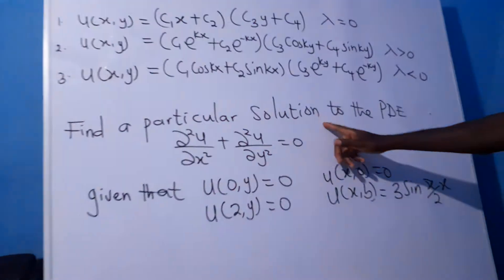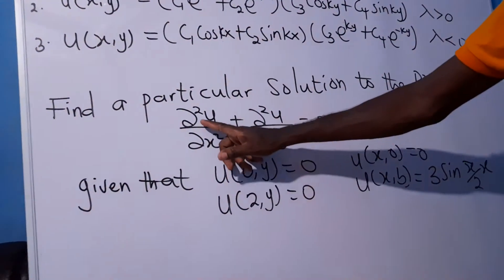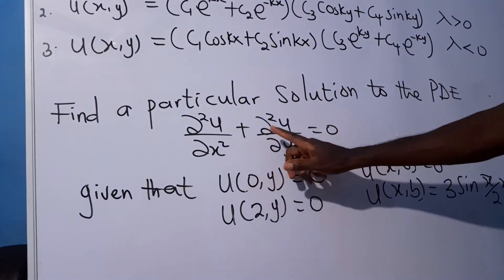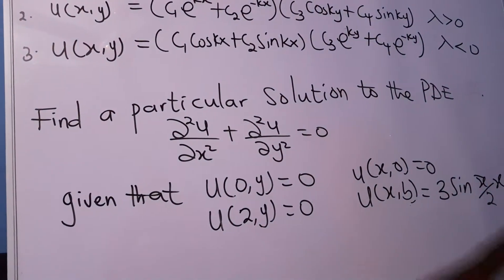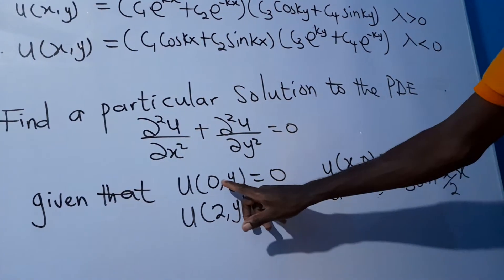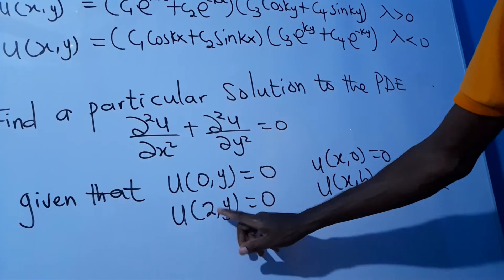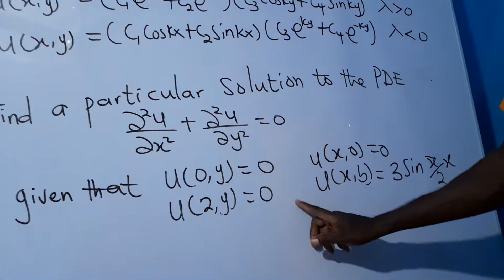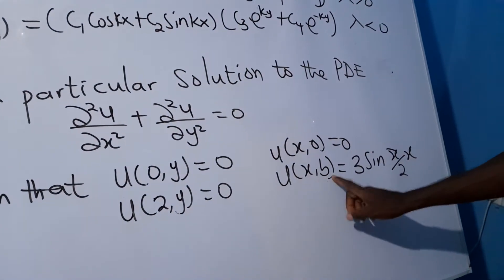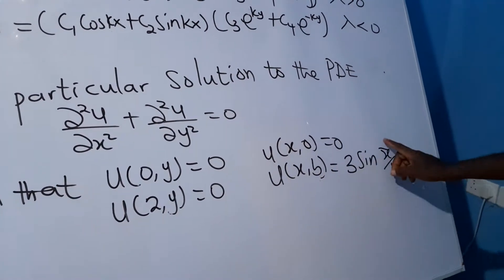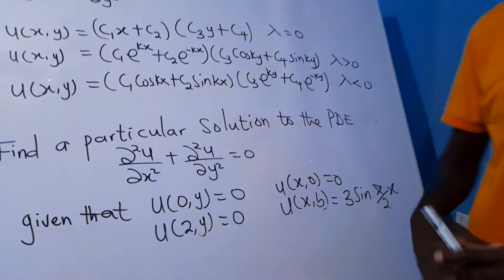The problem says: find a particular solution to the partial differential equation ∂²u/∂x² + ∂²u/∂y² = 0, given the boundary conditions: u(0,y) = 0, u(2,y) = 0, u(x,0) = 0, and u(x,b) = 3 sin(πx/2), where b is a constant.